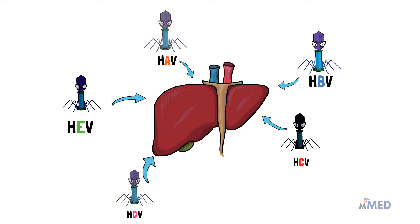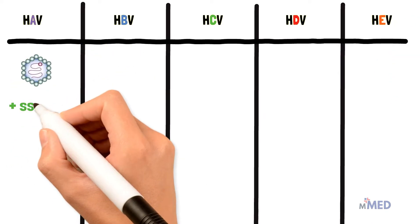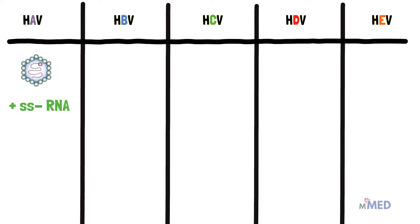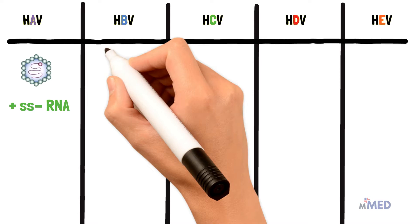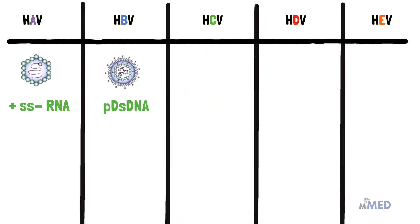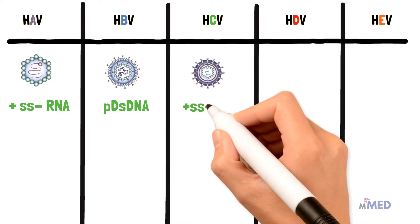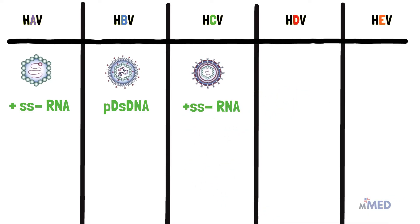All five viruses have different features unique to them. Hepatitis A virus has a positive single-stranded RNA molecule inside it. Positive sense means that this RNA can use the host cell's ribosome to make proteins via translation. Hepatitis B virus on the other hand has a partial double-stranded DNA molecule. Hepatitis B virus is the only one out of all five which contains DNA. Hepatitis C virus also has a positive single-stranded RNA molecule.